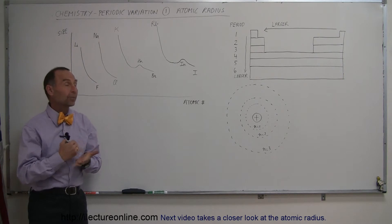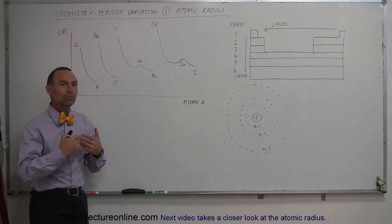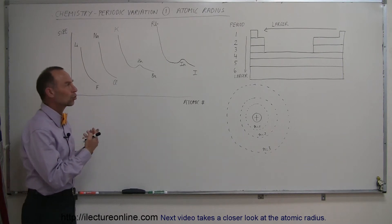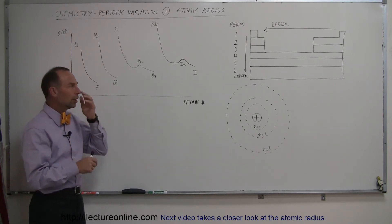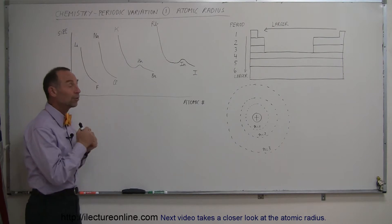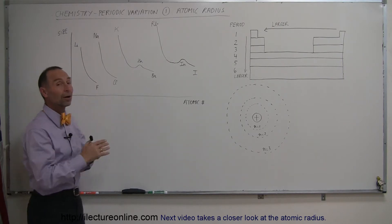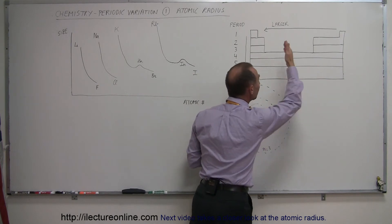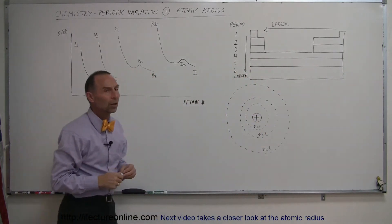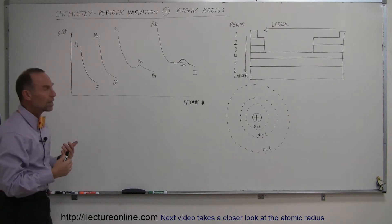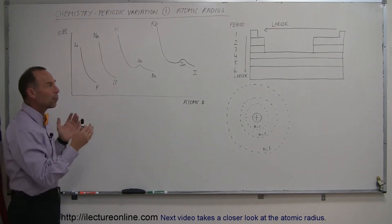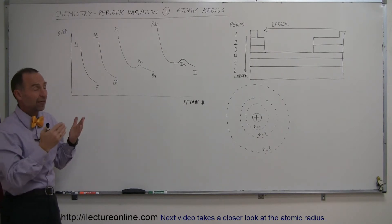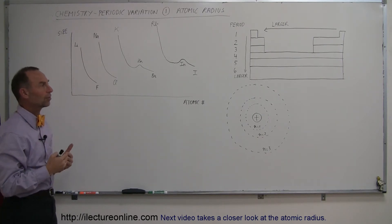Based upon what period the atoms are in, they will have a certain property — certain size, certain electronegativity, certain charge, and so forth. So we can tell a bunch of things about atoms simply based upon what period they are in, and also quite often where they are left to right, which column they belong to. We're going to draw some generalities between different properties of atoms and where things appear in the periodic table.